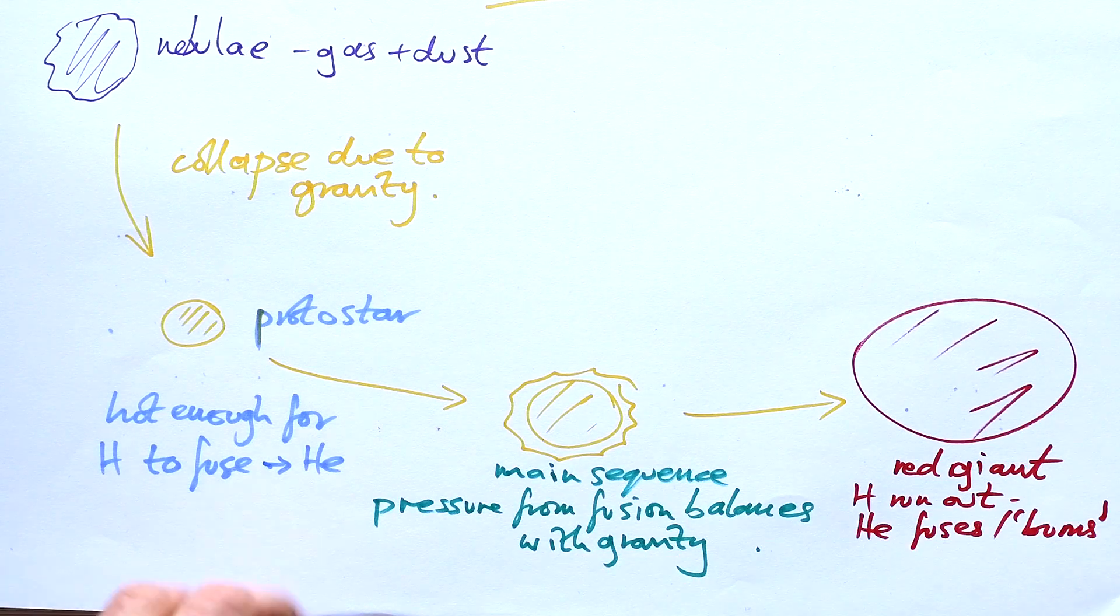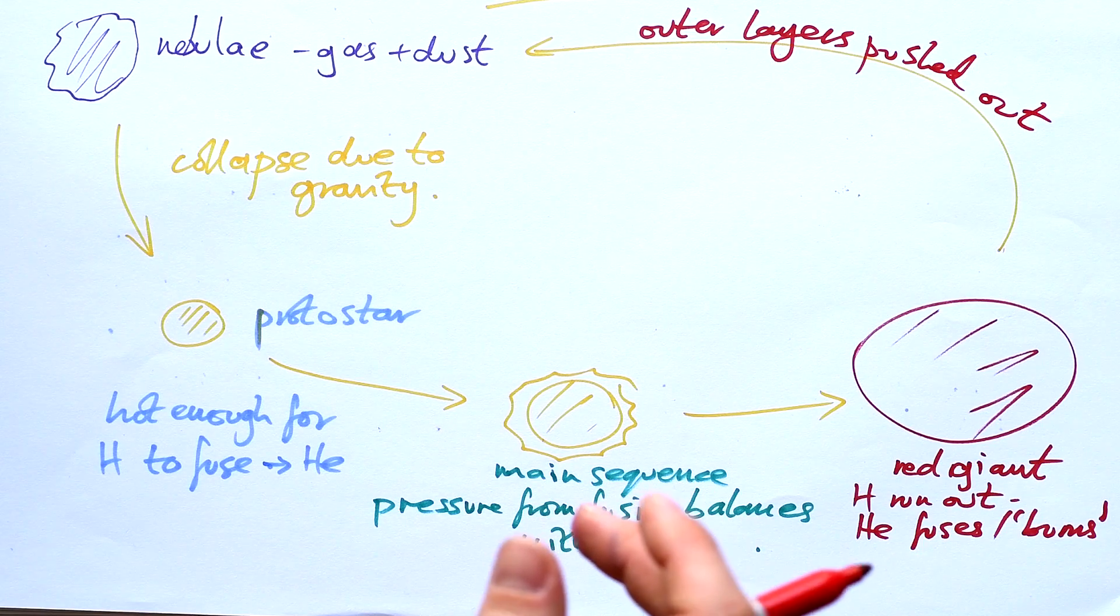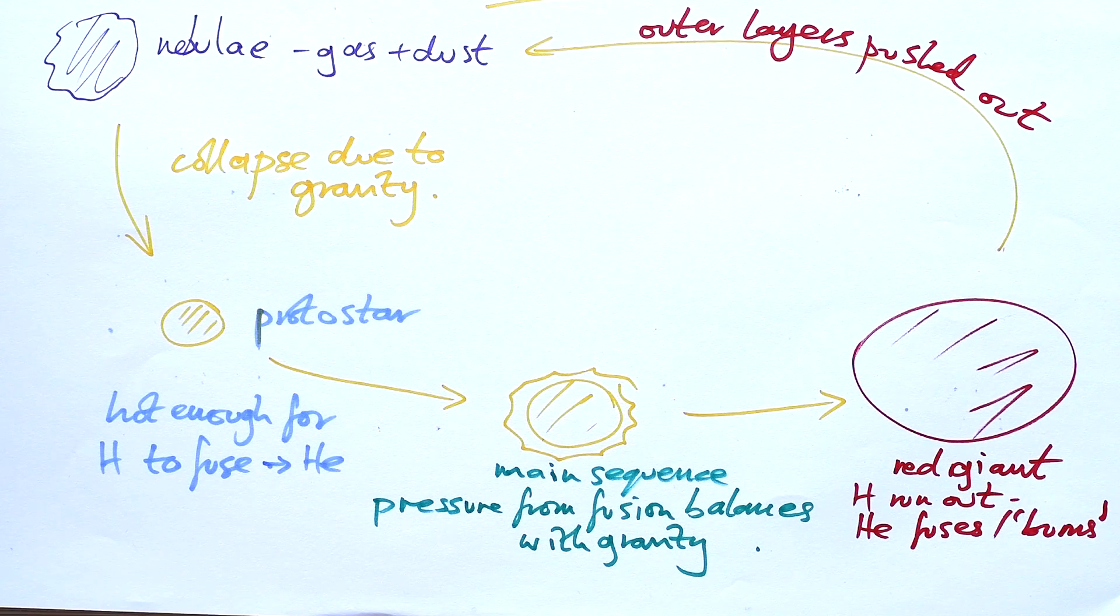What happens? The outer layers, they're pushed out. When that happens, we say it's gone supernova. These can actually outshine whole galaxies when they happen. And that then goes on to form a nebula, and the whole process potentially starts all over again.